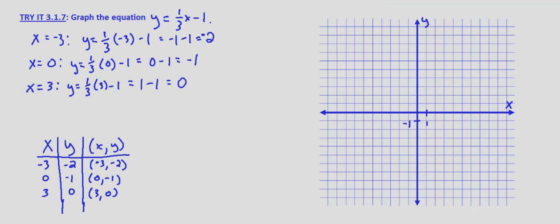So negative 3, negative 2 - we go 3 to the left: 1, 2, 3, and down 2: negative 1, negative 2. So there's the first point we found.